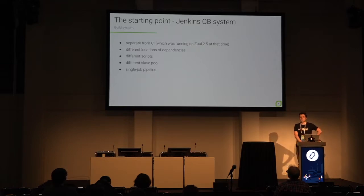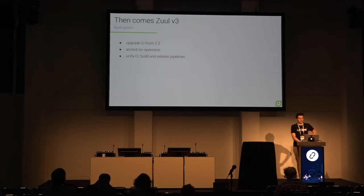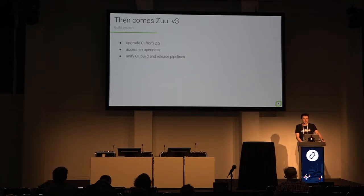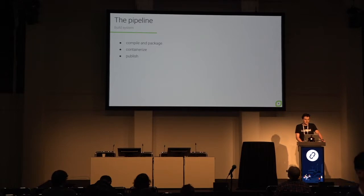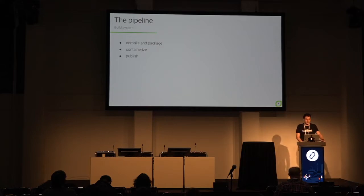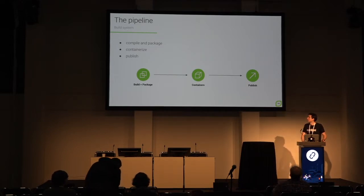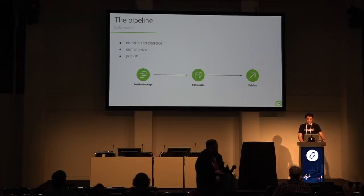While migrating to Zuul version 3, we had an idea to use the same jobs we use in continuous integration for testing to power our release pipeline. We managed to do it, and right now the Tungsten release system runs entirely on Zuul. The build pipeline consists of three steps: first we compile the code and package it to RPM packages, then we build Docker images, and then we publish to whatever registries we want — a three-step daily build pipeline.